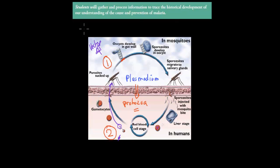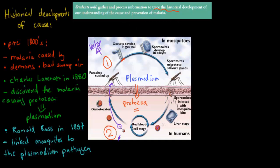The dot point says we need to trace the historical developments of our understanding of the cause and prevention of malaria. So first, let's talk about the historical developments of the cause of malaria. Before the 1800s — pre-1800s — we knew about malaria and a lot of people were dying from it, but we didn't really know what was the cause.